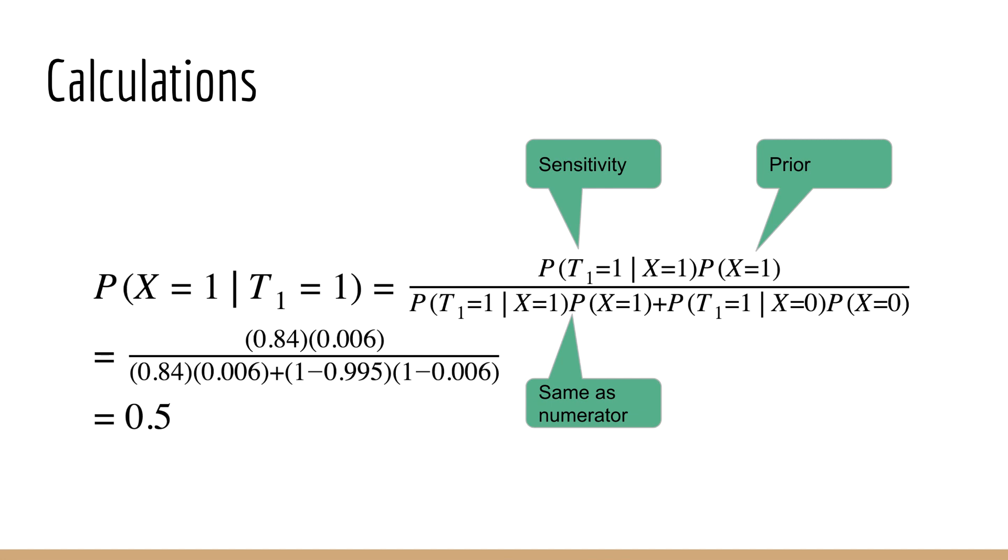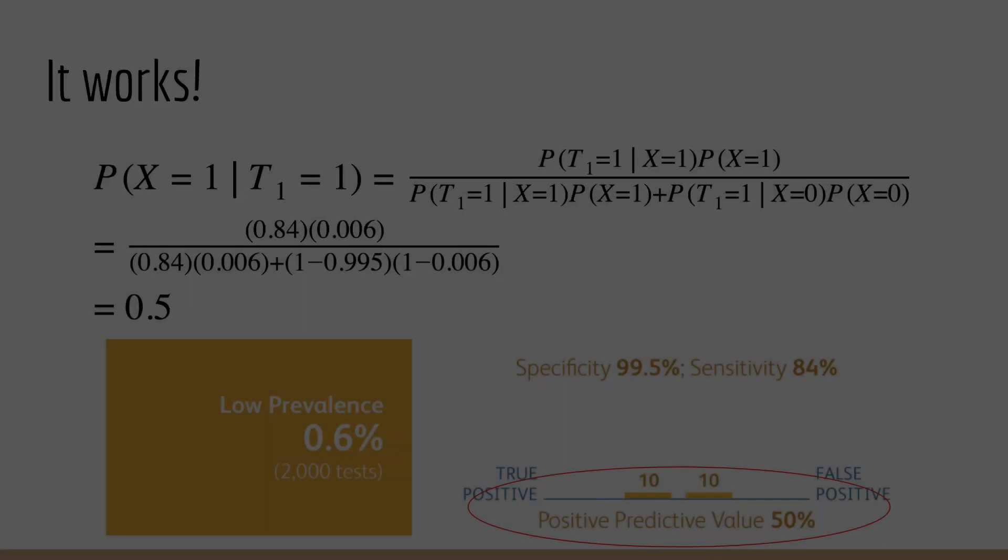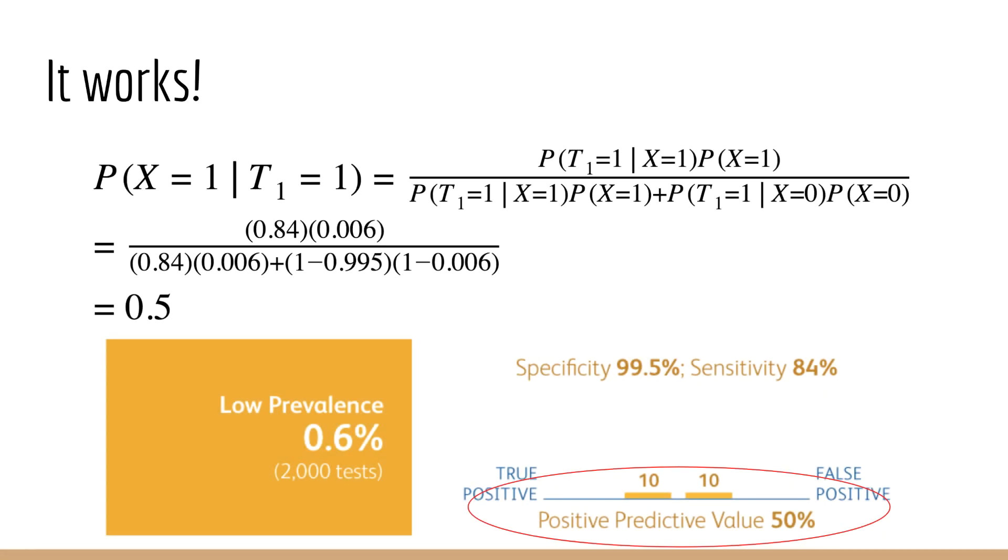In this case, we're not given this probability, but it can be calculated from the specificity. We know that the probability of the test being negative given that Elon does not have the virus is 99.5%. That's the probability of a true negative. Therefore, the probability that the test is positive given that Elon does not have the virus is just 1 minus 99.5%. In other words, it's the probability of a false positive. Similarly, the prior probability of not having the virus is just 1 minus 0.6%. As you can see, the result is 50%, which agrees with the result from the product's information page. This is actually a very interesting conclusion. It means that if the prevalence of the virus is low, and your test comes back positive, the probability that you actually have the virus is only 50%.